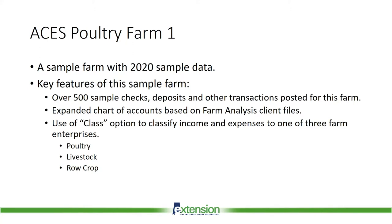If we're going to discuss farm accounting, we need a sample farm QuickBooks file, so we developed the ACES Poultry Farm number one. The key features include over 500 sample checks, deposits, and other transactions posted for the 2020 farm year, an expanded chart of accounts, and the use of the class option to classify income and expenses to one of three farm enterprises: poultry, livestock, and row crop. Here in Northern Alabama, a poultry farm with livestock and row crop side businesses is a very common operation. This class feature can help us see which farm operations make the most money or need to be reviewed for possible changes.